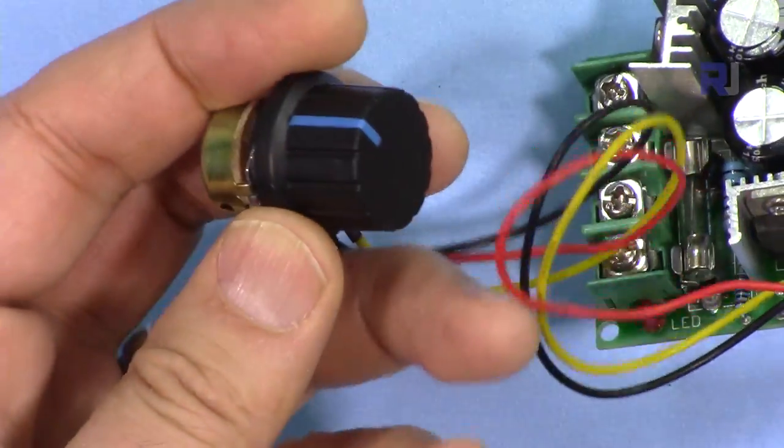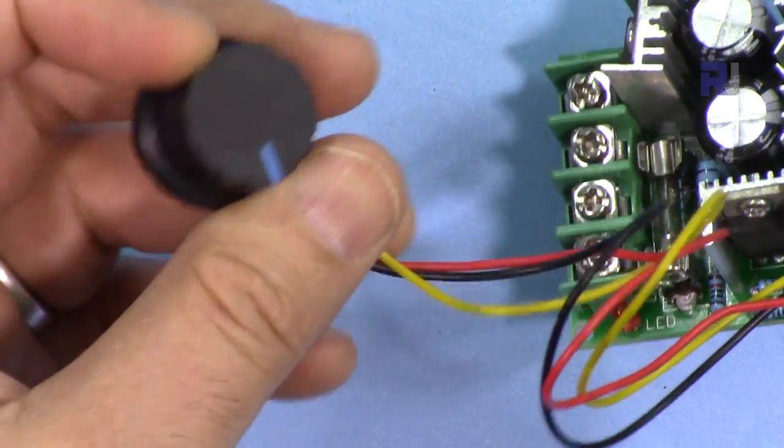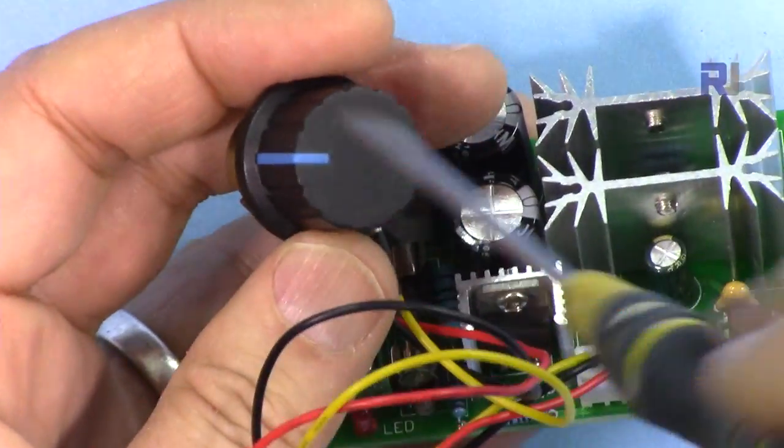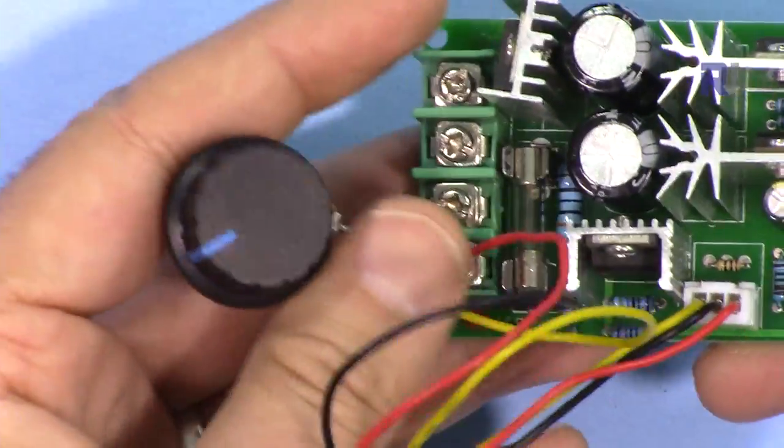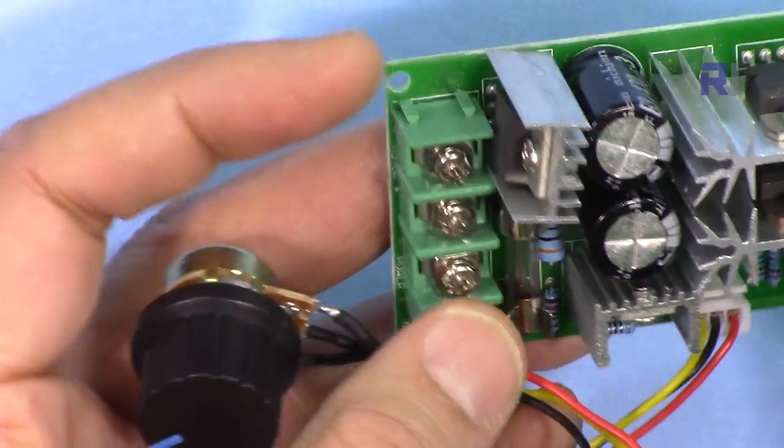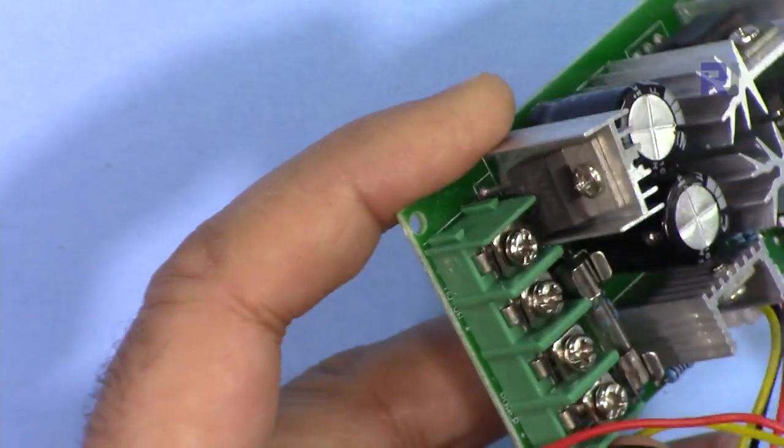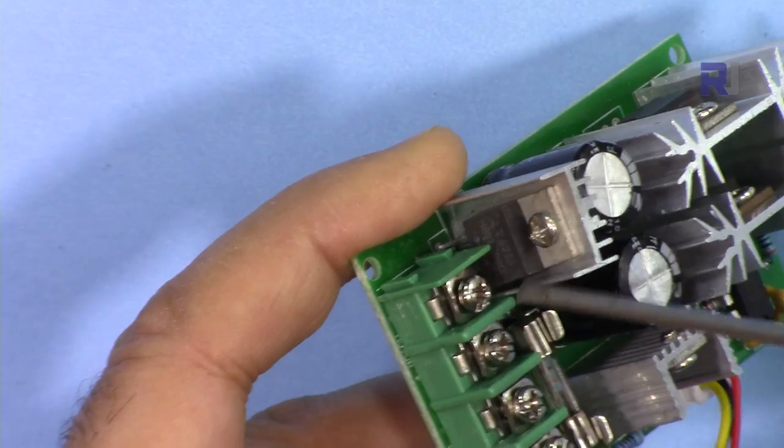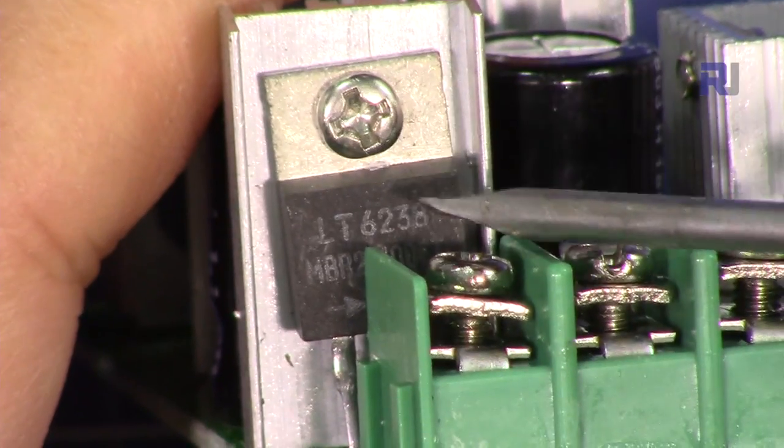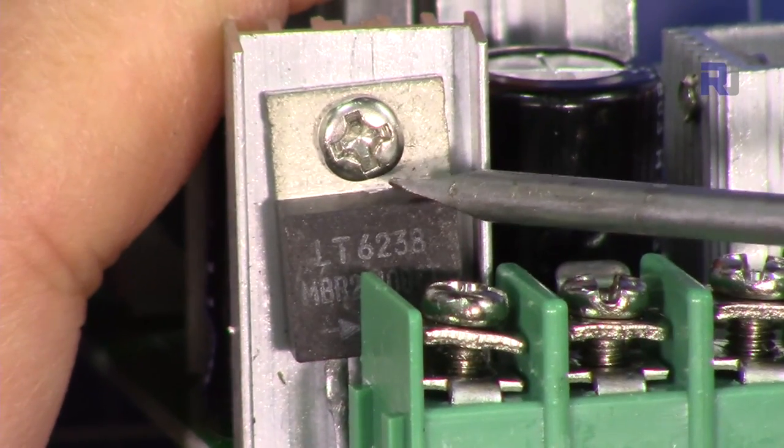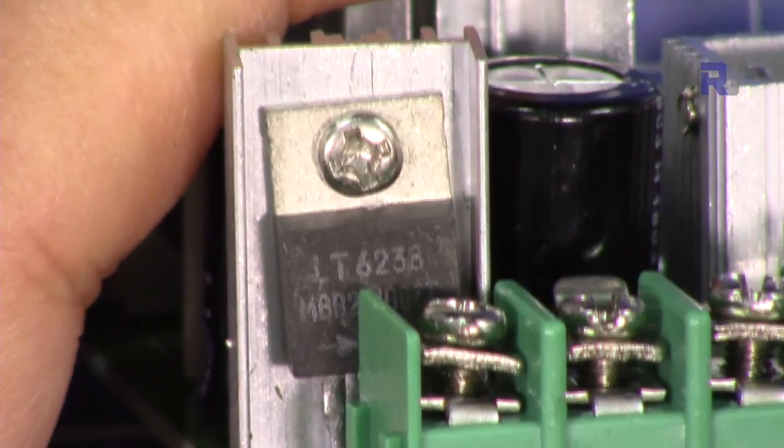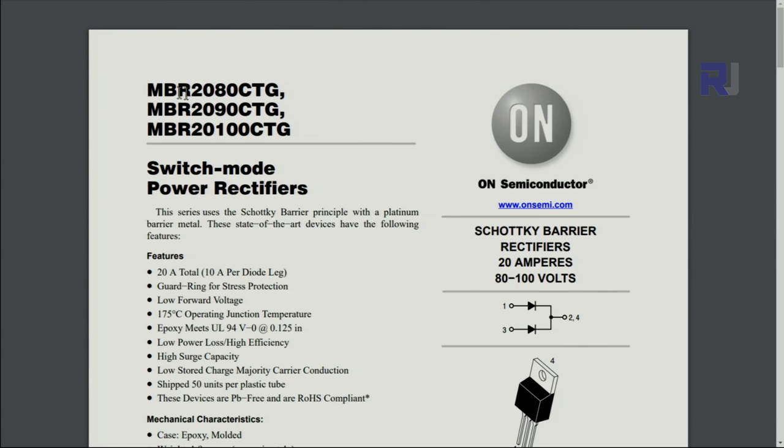With this potentiometer you change the duty cycle and consequently it will change the speed of the motor. Then we have here a diode that is part of this pair of diodes used as a protection of the output stage against the inductive load spikes that come to protect the circuits. The diode is the MBR 2100 CTG.